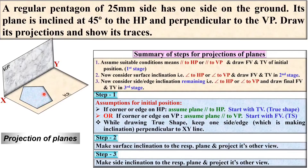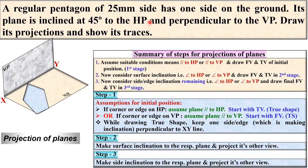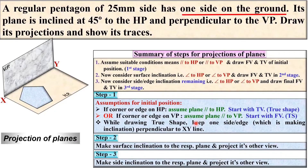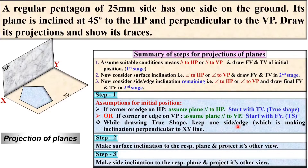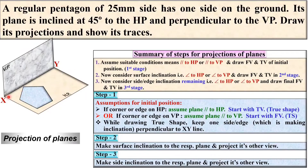The plane is parallel to HP. Now once again the plane can be in any one position. Since one side is on the ground, in the first stage we have to keep one side or edge perpendicular to the XY line, and that should be in the left position. Here you can see the side is perpendicular to XY.